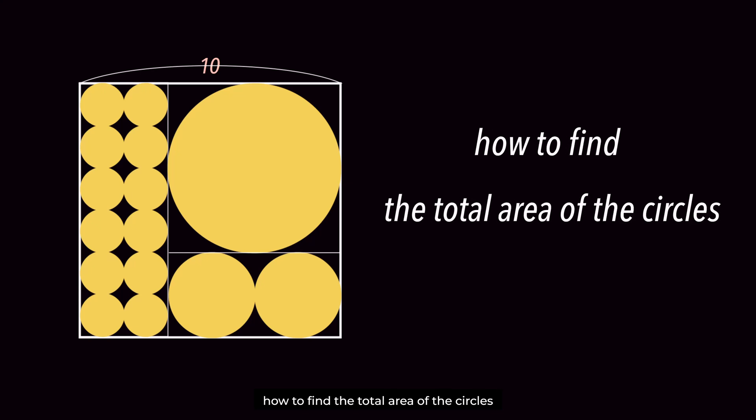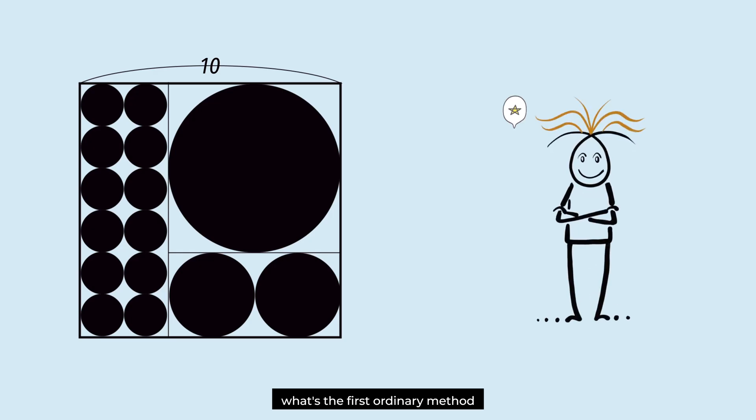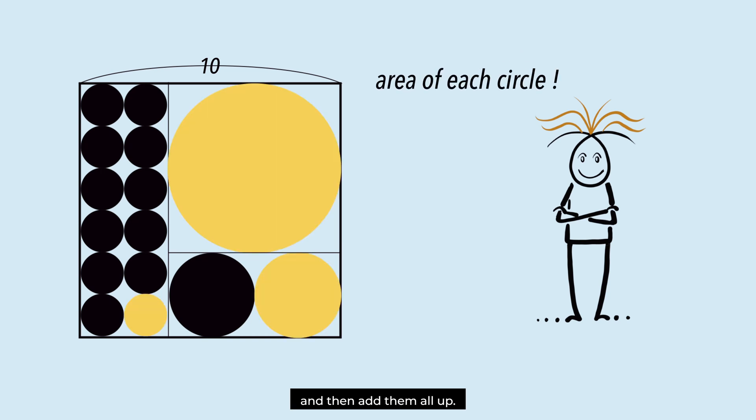How to find the total area of the circles in a second? What's the first ordinary method that comes to mind? It is to find the area of each circle and then add them all up.